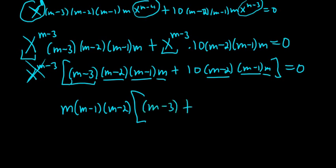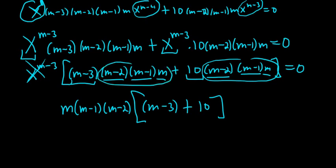we have m minus 3 plus 10. So we're just pulling this out and pulling this out, and that leaves us with m minus 3 and 10. And that's equal to 0.